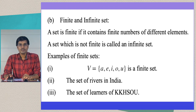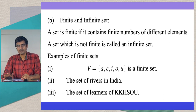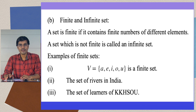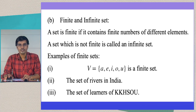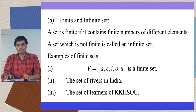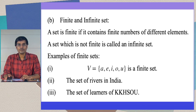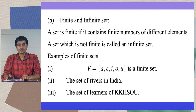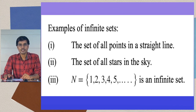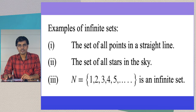The next type is finite and infinite sets. A set is finite if it contains a finite number of different elements — meaning we can count the number of elements. A set which is not finite is called infinite. Examples of finite sets: the set of vowels in the English alphabet has five elements, so it is finite; the set of rivers in India is also finite. Examples of infinite sets: the set of all points lying on a straight line; the set of all stars in the sky; the set of natural numbers N = {1, 2, 3, 4, 5, ...} up to infinity.